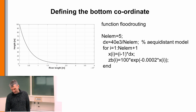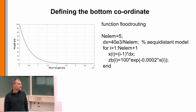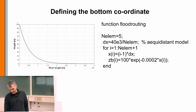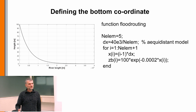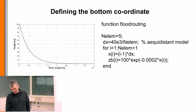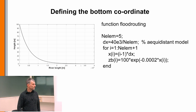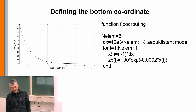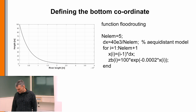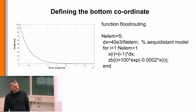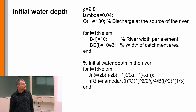For the bed profile I take an exponential shape. This profile has a very steep area in the mountainous part of the river, and then it gets flatter and flatter as it approaches something like the ocean. These are the first lines of the code.